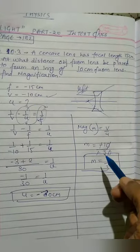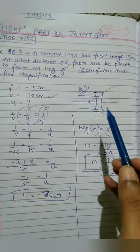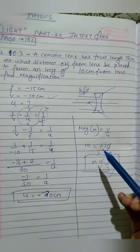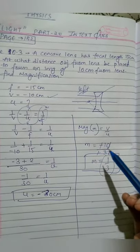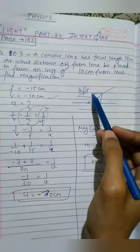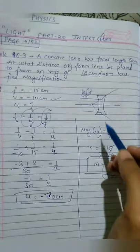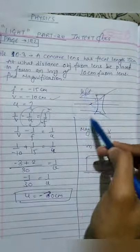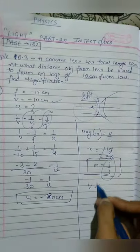What does that mean? The image is one-third the size of the object. This is the magnification. How will the image be? It will be virtual and erect because it is always on this side.